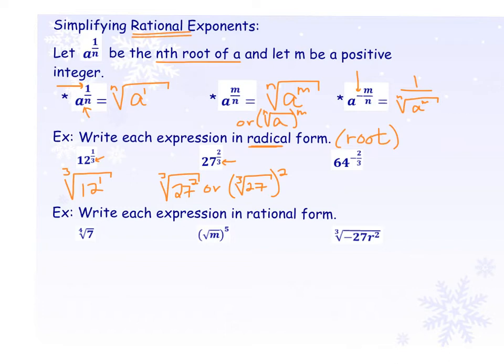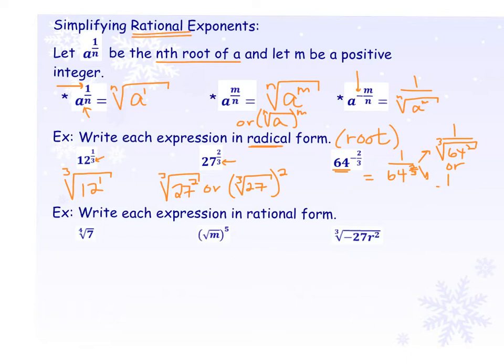For 64 to the negative 2 thirds power: negative means we take the reciprocal of 64, giving 1 over 64 to the 2 thirds. From there, we convert to radical form — keeping the fraction, it becomes 1 over the cubed root of 64, with that entire cubed root raised to the 2nd power. Those are all the ways to convert from a rational exponent to radical form.